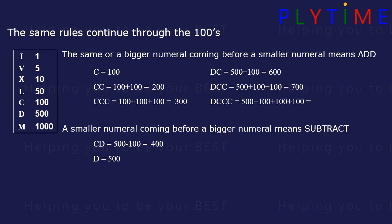Then we move to 900, which is 100 before 1000, so it's CM. CM is 1000 minus 100. M alone is 1000.